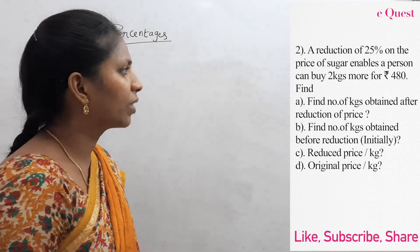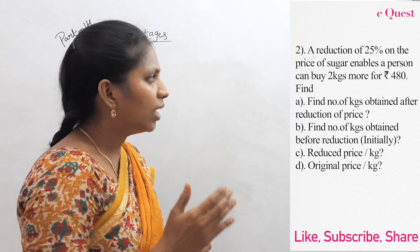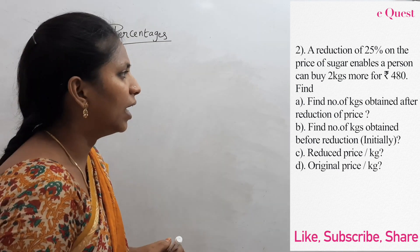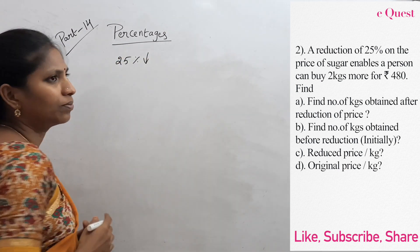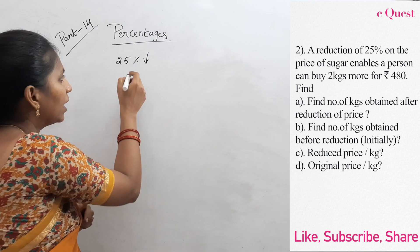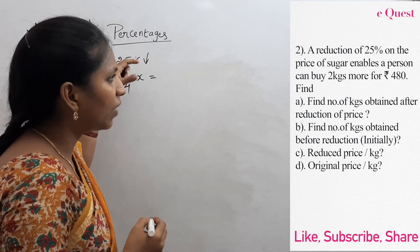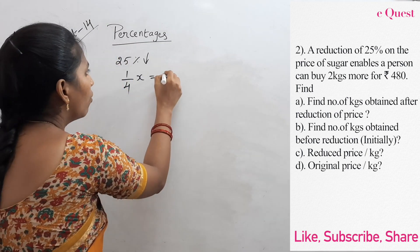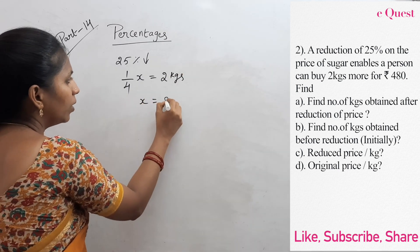Now second question. A reduction of 25 percent on the price of sugar enables a person to buy 2 kgs more for 480 rupees. 25 percentage in the form of a fraction is 25 by 100, which is 1 by 4. So 1 by 4 times x equals 2 kgs more, giving x equal to 8 kgs.